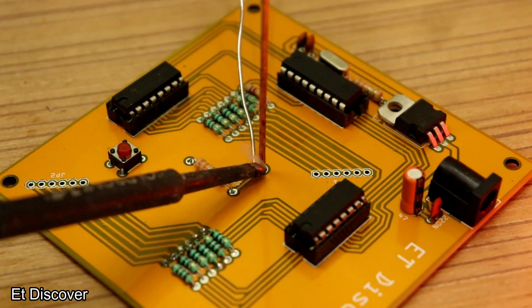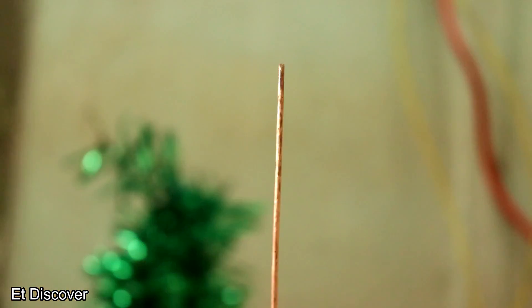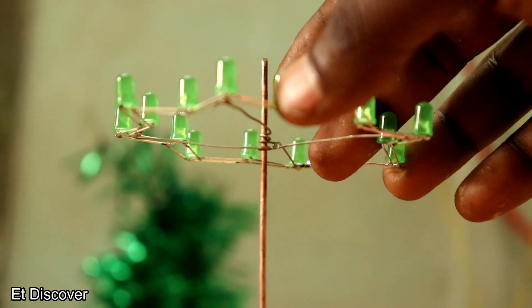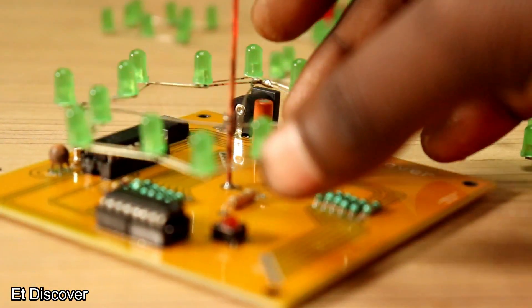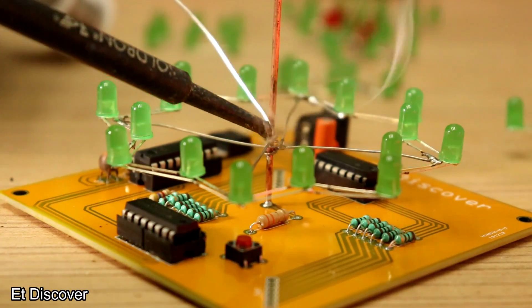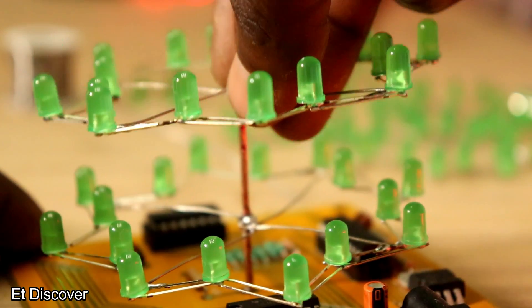And now I solder the copper stick on the board. And I put the stars on this stick from the top and take it down to the bottom in a perfect position and solder it. I repeat this process for all the stars.